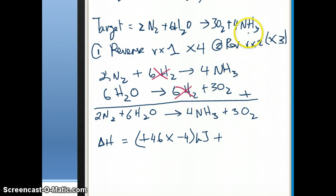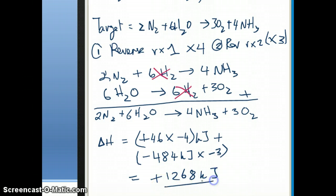For reaction 2, where again I reverse and multiply by 3. For reaction 2, I have a delta H of negative 484. That's the original value. And I'm going to multiply in this case by negative 3 because that's the manipulation I did here. And if I were to do both of these steps, I should be able to add both numbers up. And then what I get in the end is plus 1268 kilojoules as my answer.